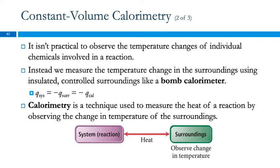It isn't practical to observe the change in temperature of chemical reactants and products. Most of these reactions are going to occur in a solution, dissolved in water, or at the very least, like if you have gases reacting, they are mixed together and you can't take the temperature of each of them separately. It's difficult. So what we do is, instead of trying to measure the temperature change in the system, we measure the temperature change in the surroundings. And one way to do this is using a bomb calorimeter.